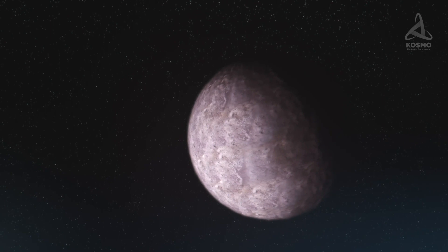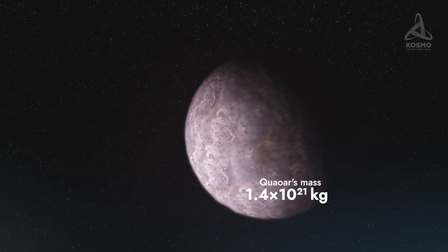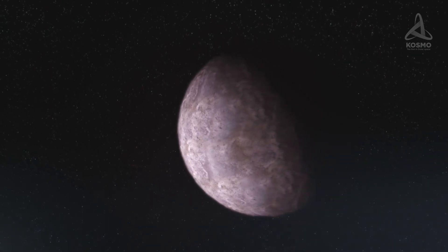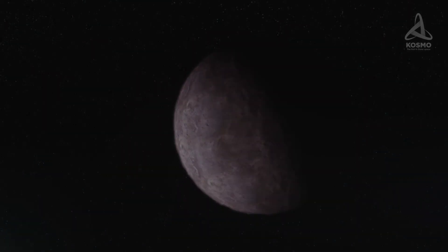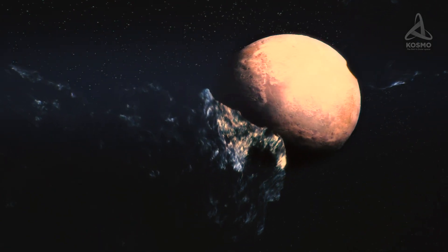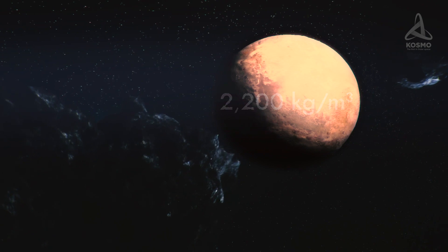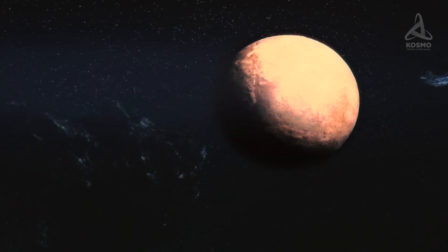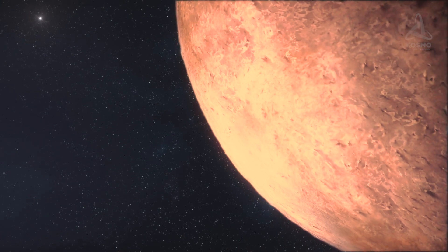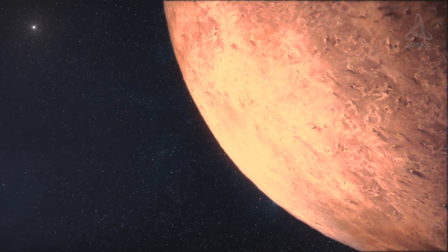Quaoar's mass is estimated at around 1.4 × 10²¹ kg, which makes it around 10 times lighter than Pluto. Quaoar's average density is approximately 2200 kg per cubic meter, which is typical of dwarf planets. The planetoid is thought to be made up of mostly rocks and water vapor, just like other objects in the Kuiper Belt.